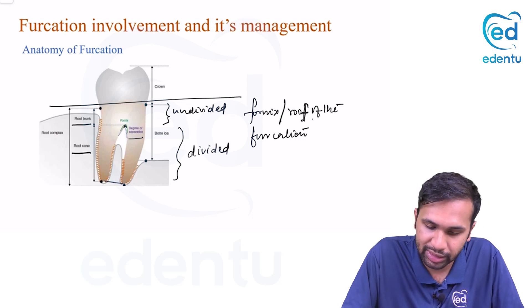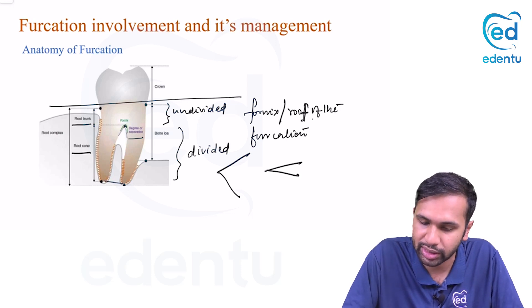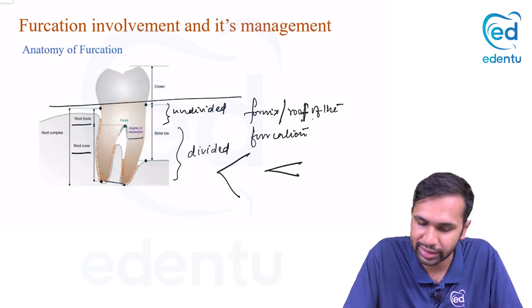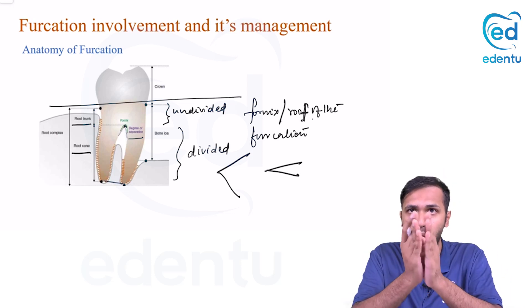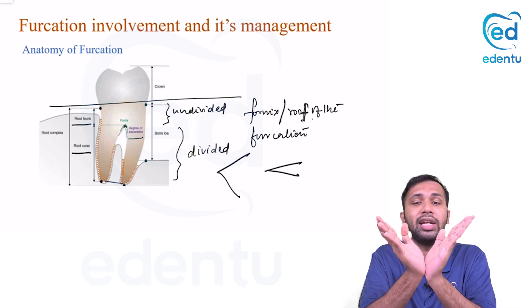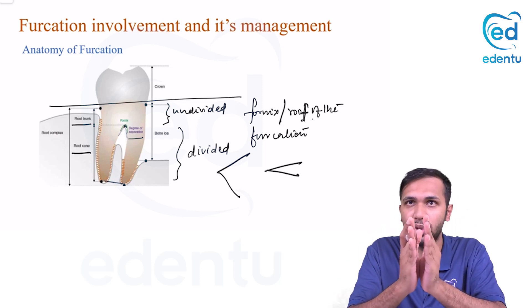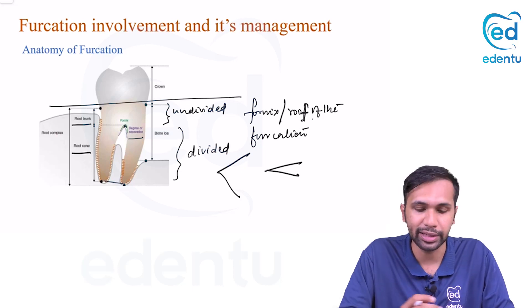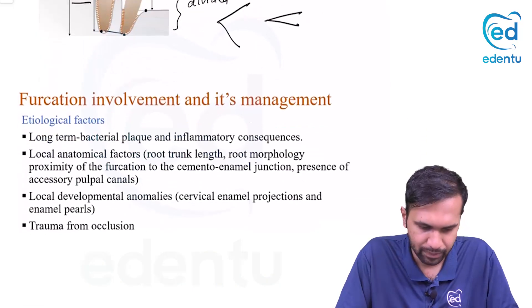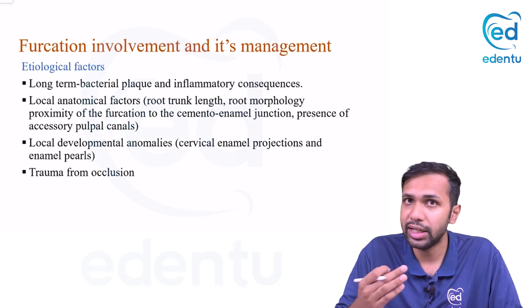If there is more angle between the roots, there is a greater degree of separation. If the roots are widely spaced, you can access this region very easily, whereas if the roots are narrower or fused, you cannot access that region easily.